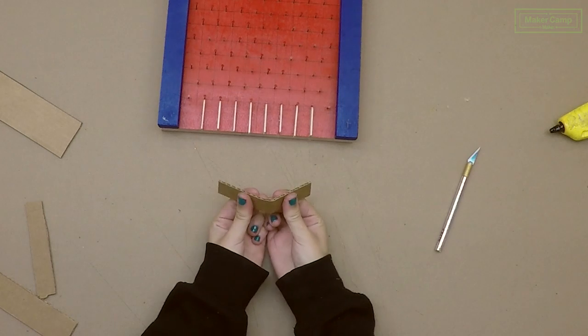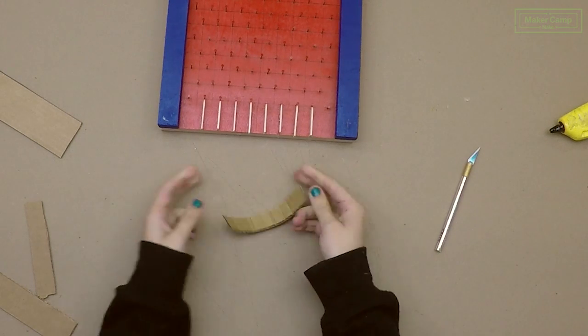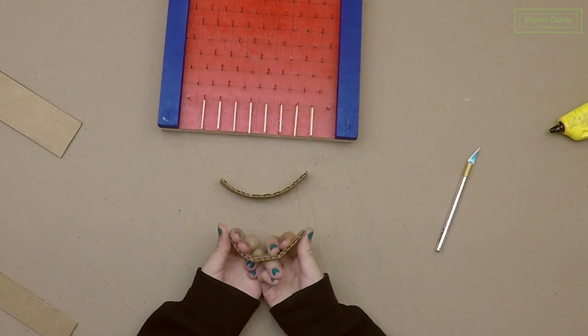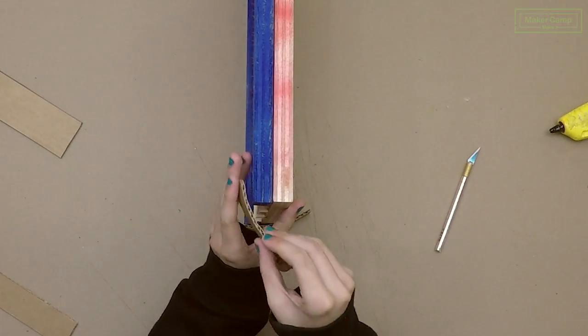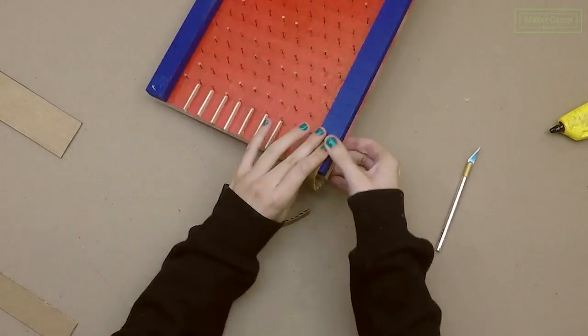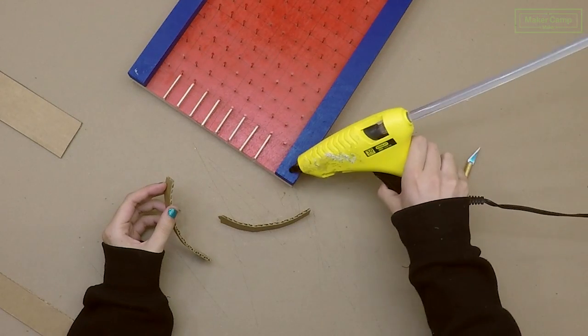Bend your cardboard straps just to give them a little flexibility and then we'll glue them onto the side.